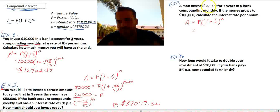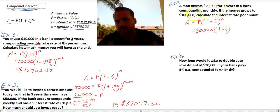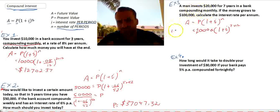A equals P bracket 1 plus I to the power of N. Now, when I do this, a man invests $20,000. That's our principle. Now we know we're not going to know our interest rate. N is the number of compounding periods. Now, seven years monthly, so that's going to be seven times 12. And we want the money to grow to $100,000.